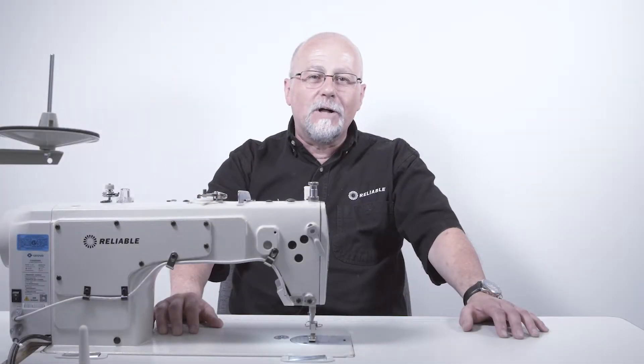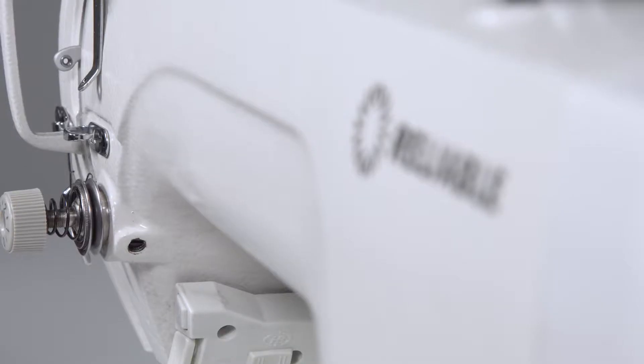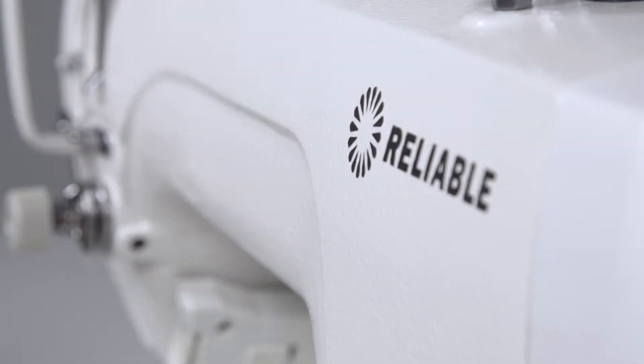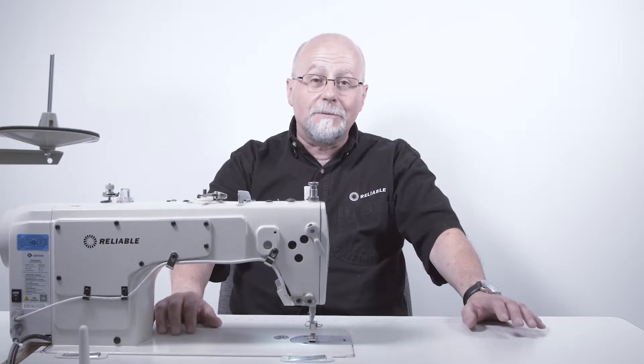Hi, my name is Brian. Welcome back to our how-to series on industrial sewing machines. Today, using a Reliable 3300 SD single needle industrial sewing machine, I'm going to show you how to wind and load a bobbin.